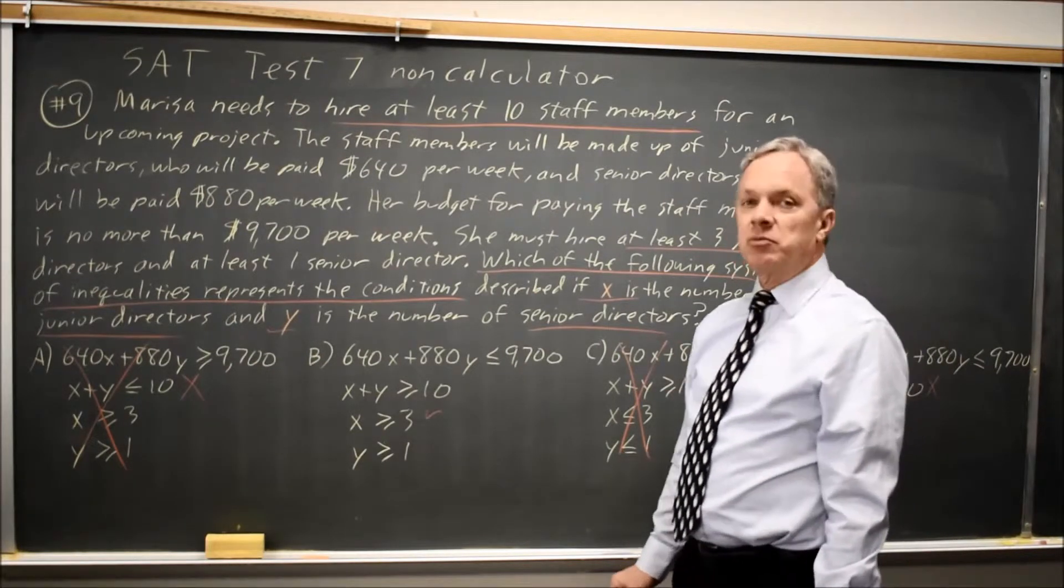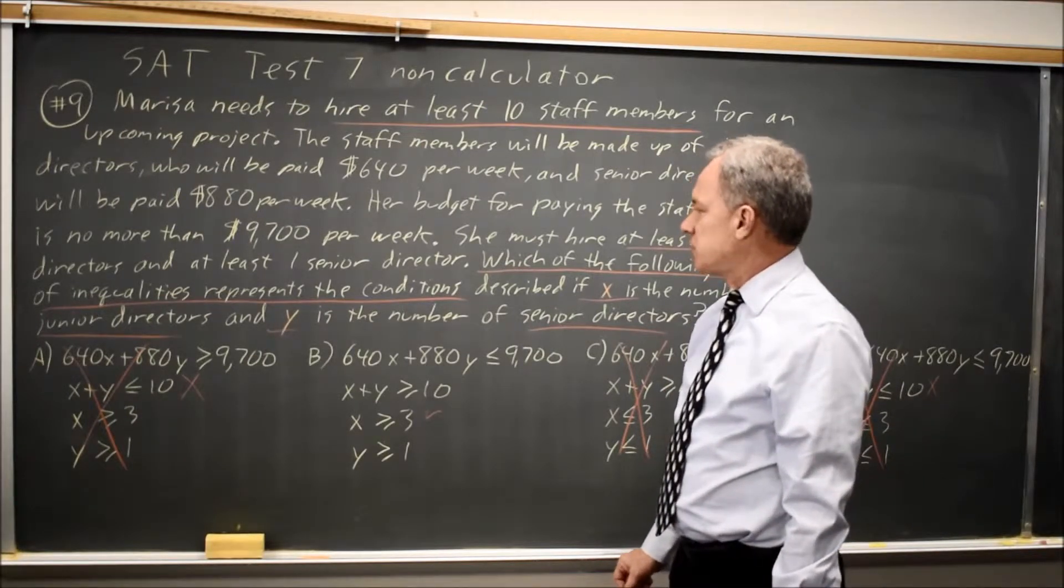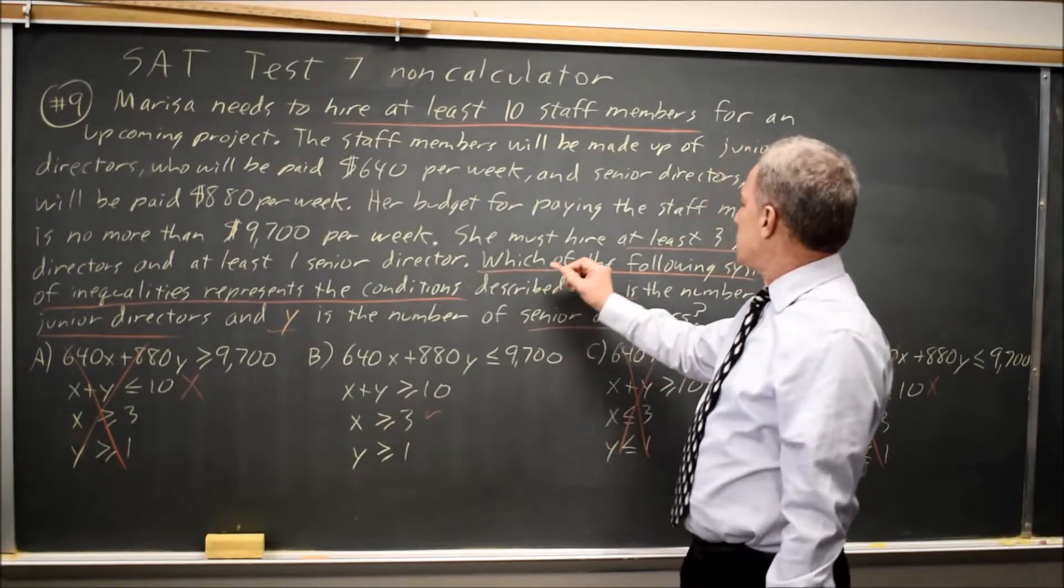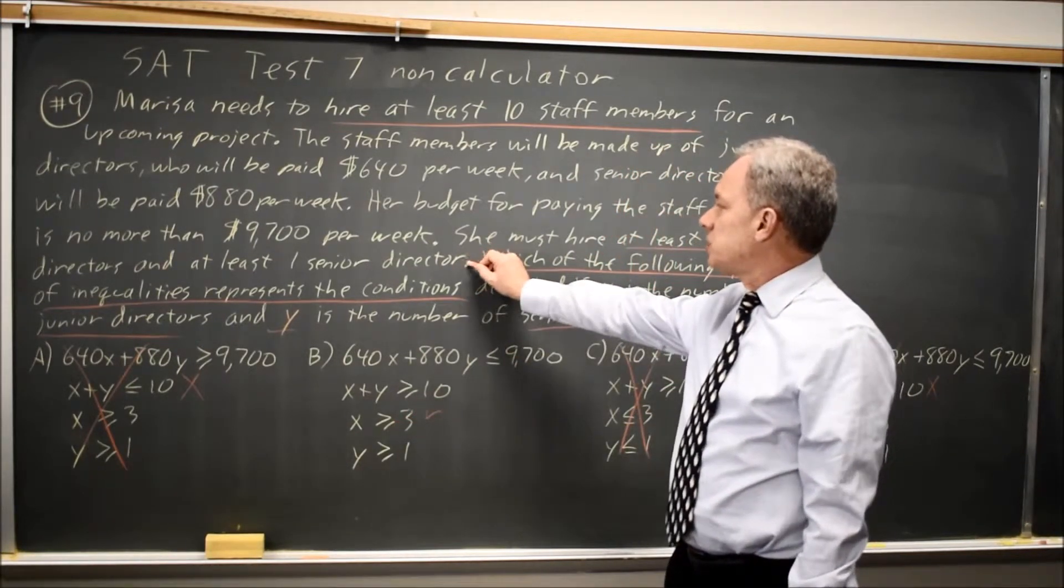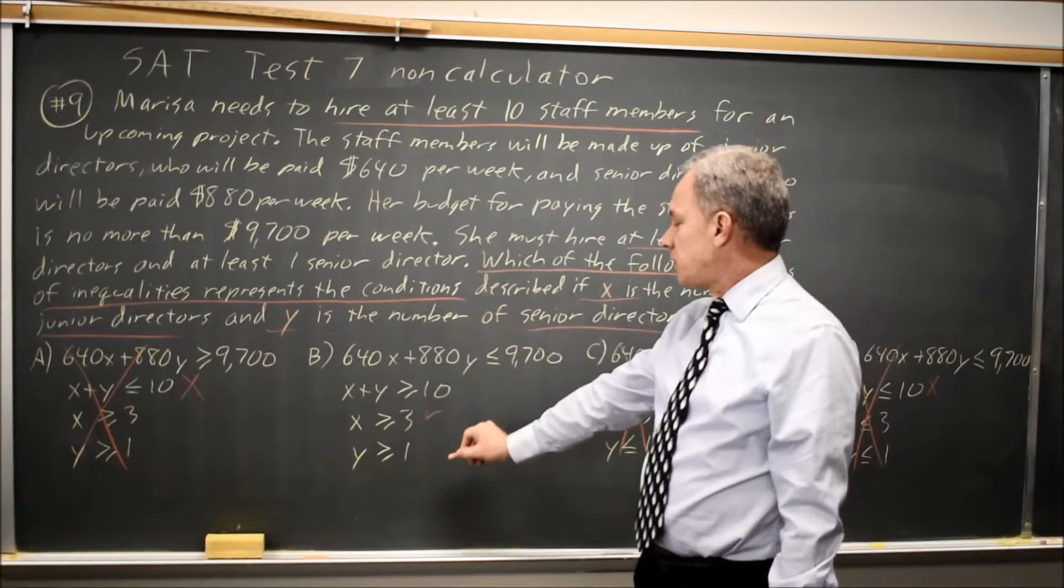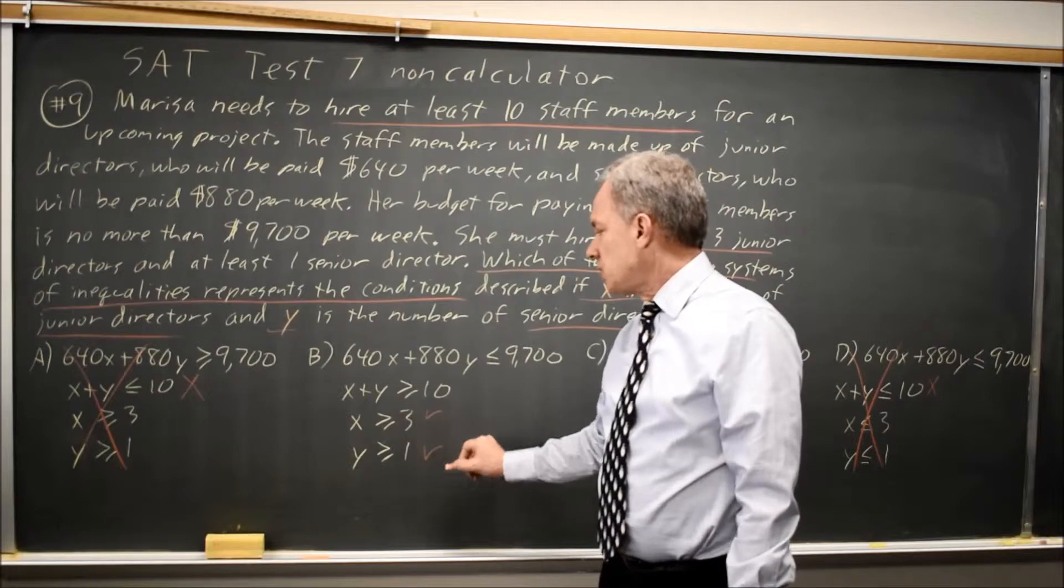At this point, we could mark choice B, but I feel more comfortable checking that all the conditions apply. She must hire at least three junior directors. That's X greater than or equal to 3. And at least one senior director. Senior directors is Y, and Y is greater than or equal to 1. That is at least 1. So that matches also.